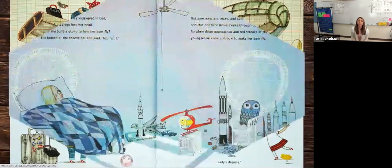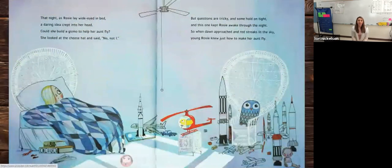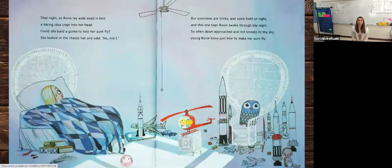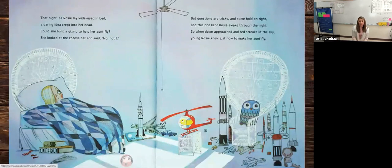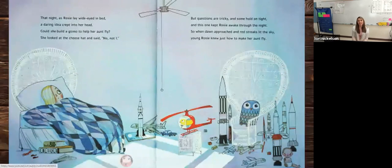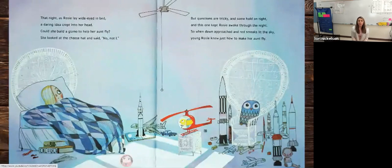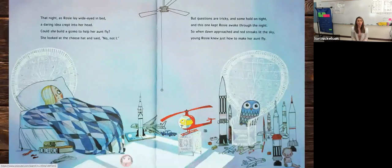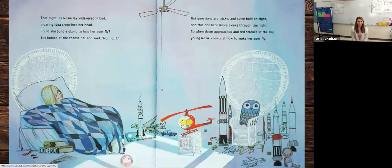That night as Rosie lay wide-eyed in bed, a daring idea kicked into her head. Could she build a gizmo to help her aunt fly? She looked at the cheese hat and said, no, not I. But questions are tricky and some hold on tight. This one kept Rosie awake through the night. So when dawn approached and streaks lit the sky, young Rosie knew just how to make her aunt fly.